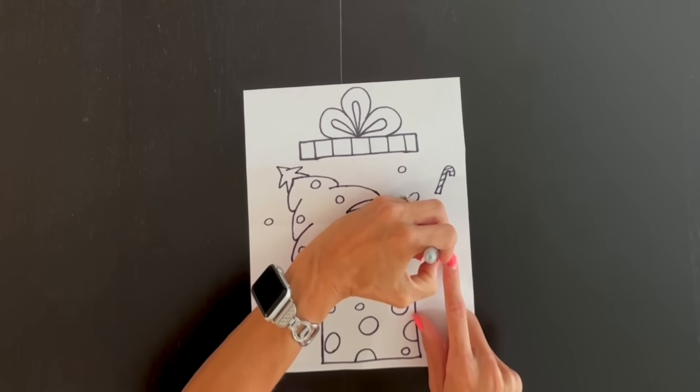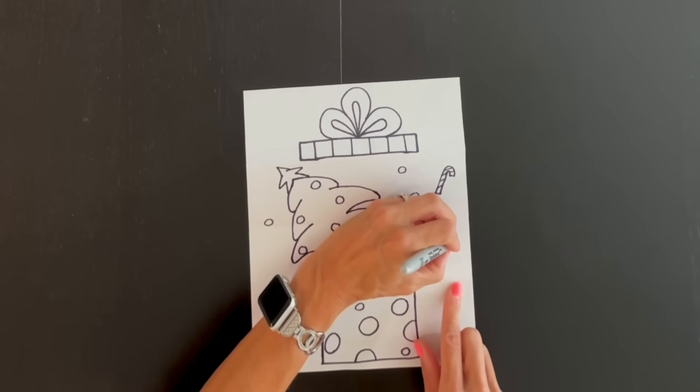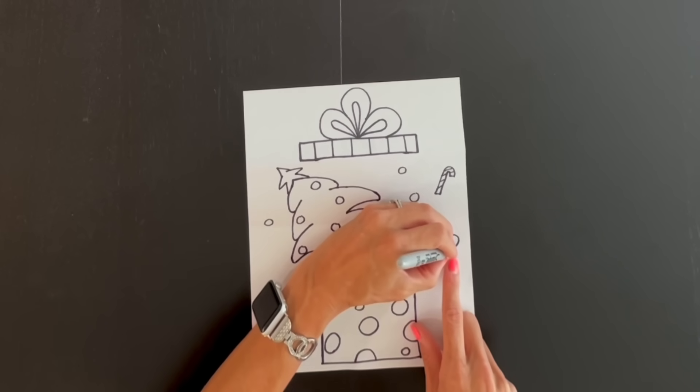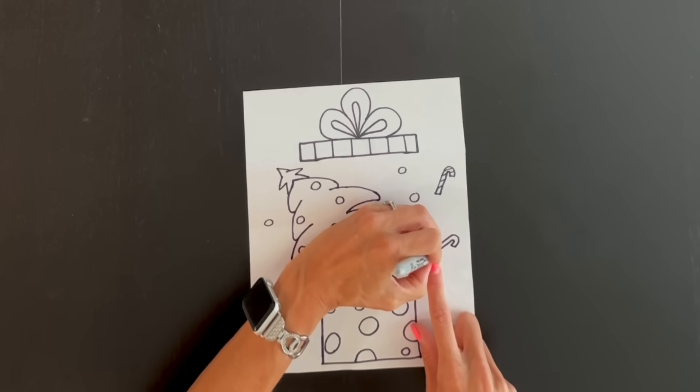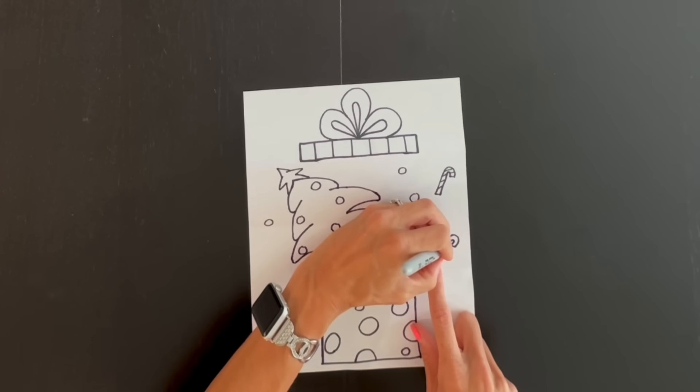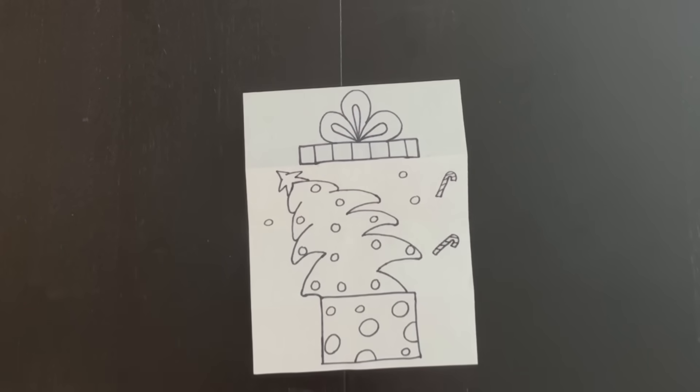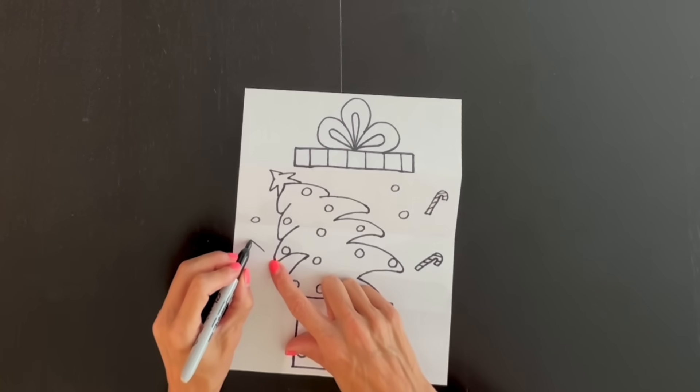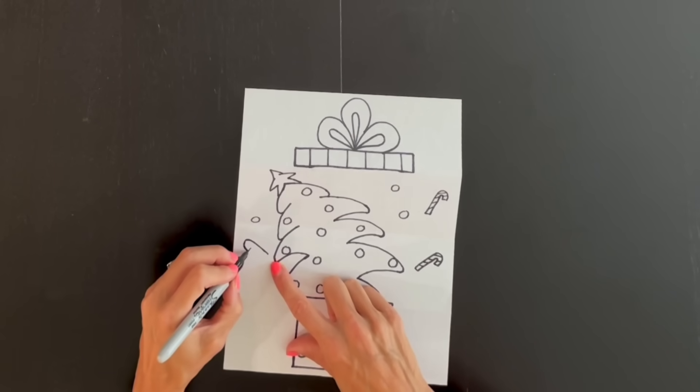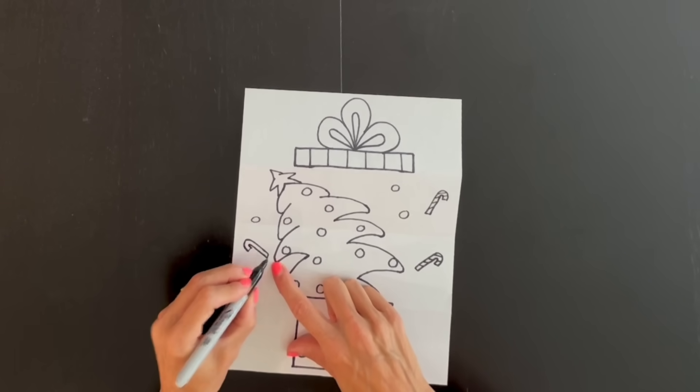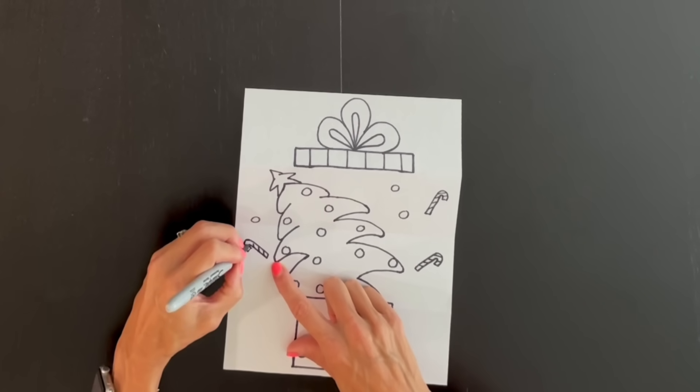I'm going to do another candy cane down here. So I've got a diagonal coming out. That hooks over. Straight line coming in. U-turn back down. And a straight line to attach. And some diagonal lines coming across. Let's do one more candy cane over here. Diagonal line with a hook. Straight line across. U-turn back down. Let's do those diagonal lines.